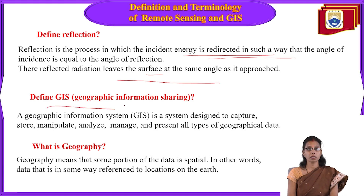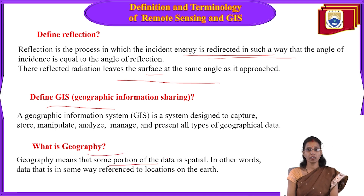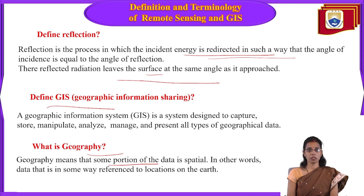GIS stands for Geographical Information System. It is designed to capture, store, manipulate, analyze, manage, and present all types of geographical data. Geography means that some portion of the data is spatial — data referenced to a location on the earth — and information about the spatial features of the earth is called Geography.